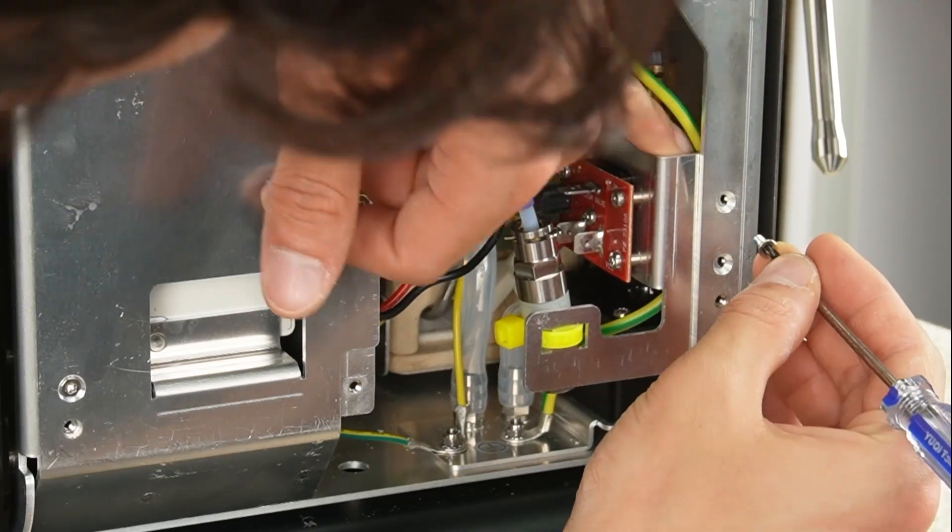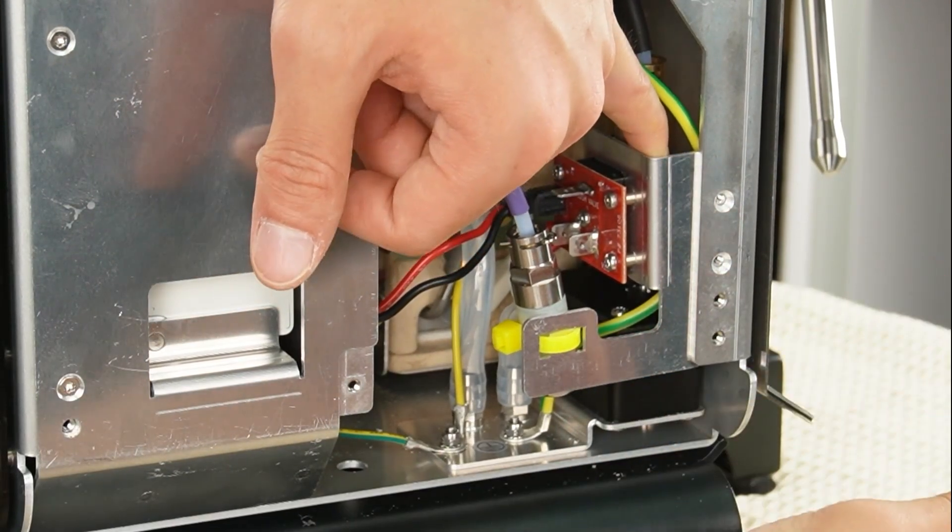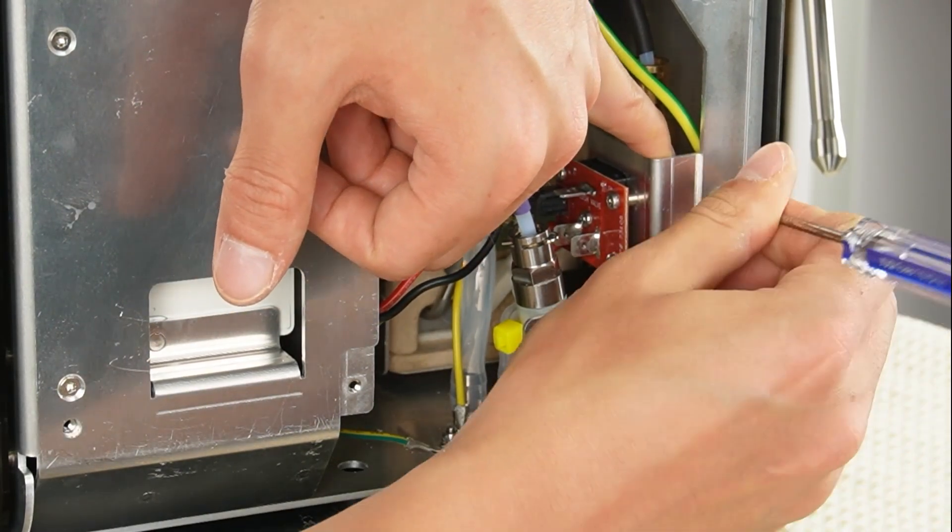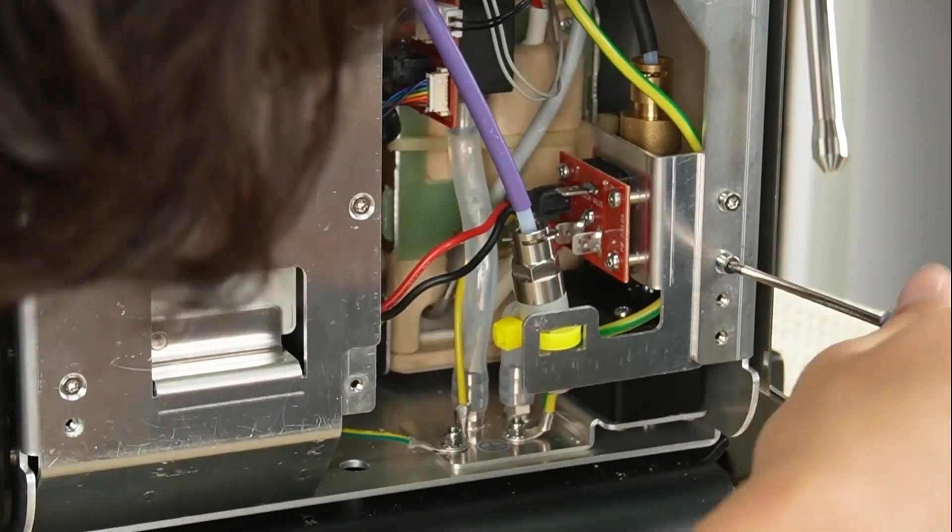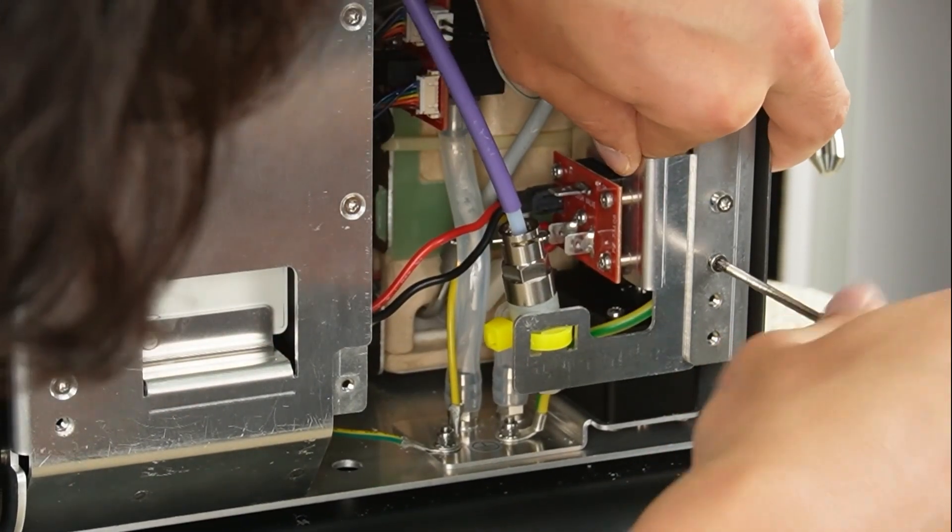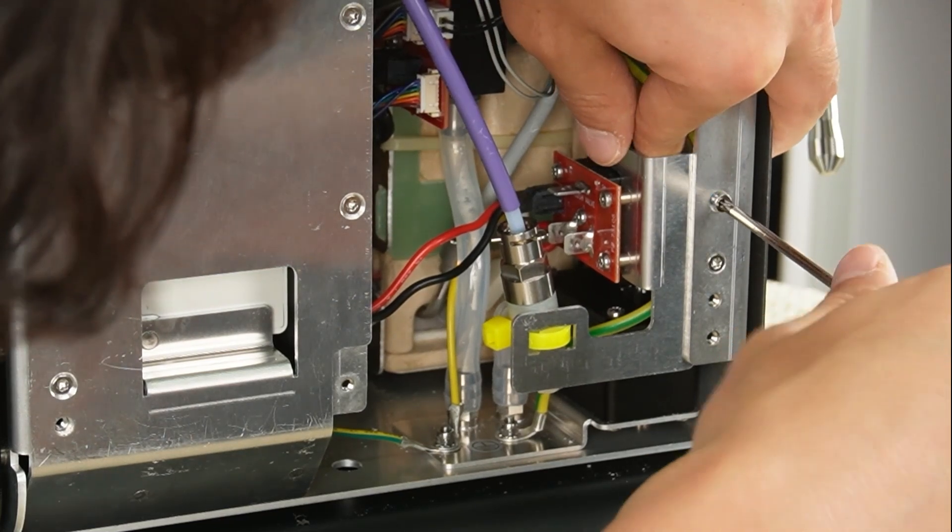Reinstall the two screws securing the drain valve assembly. Tighten the first screw halfway to allow alignment for the second. Tighten the second screw fully, then go back and fully tighten the first screw.